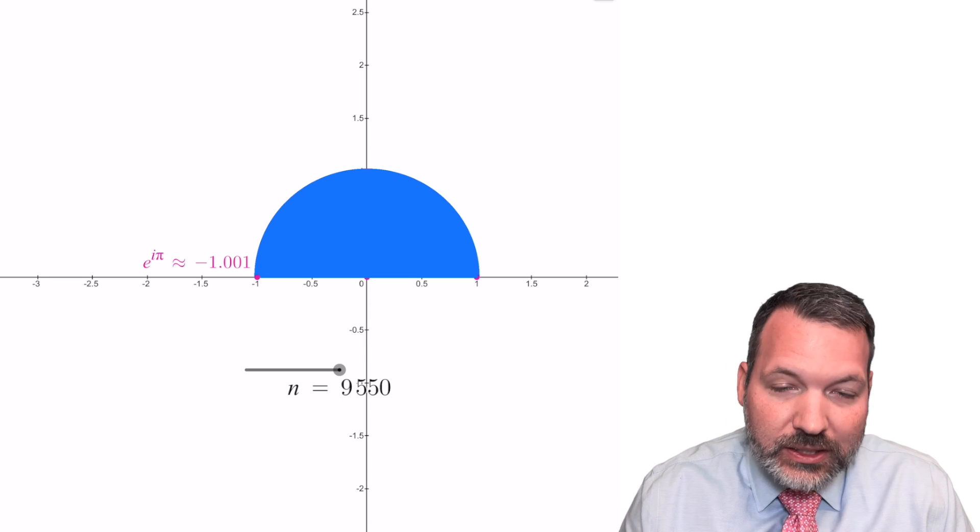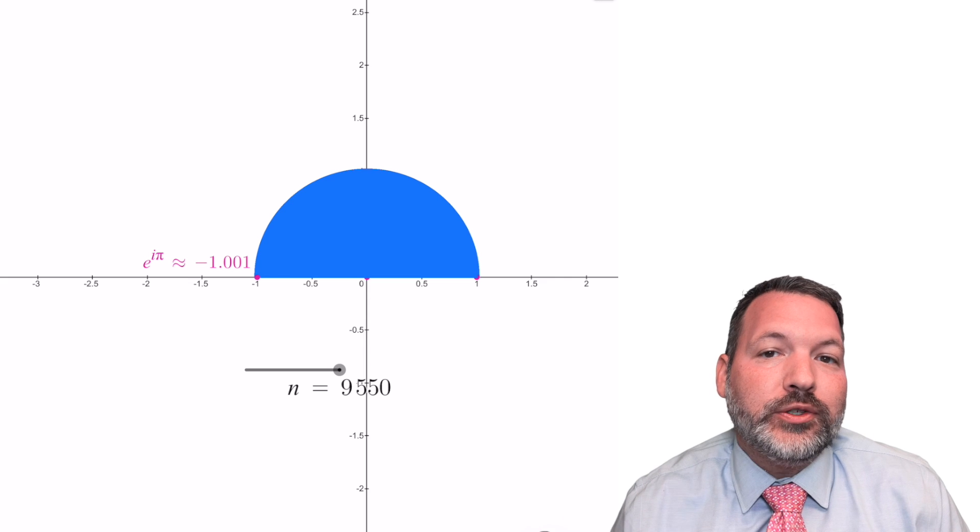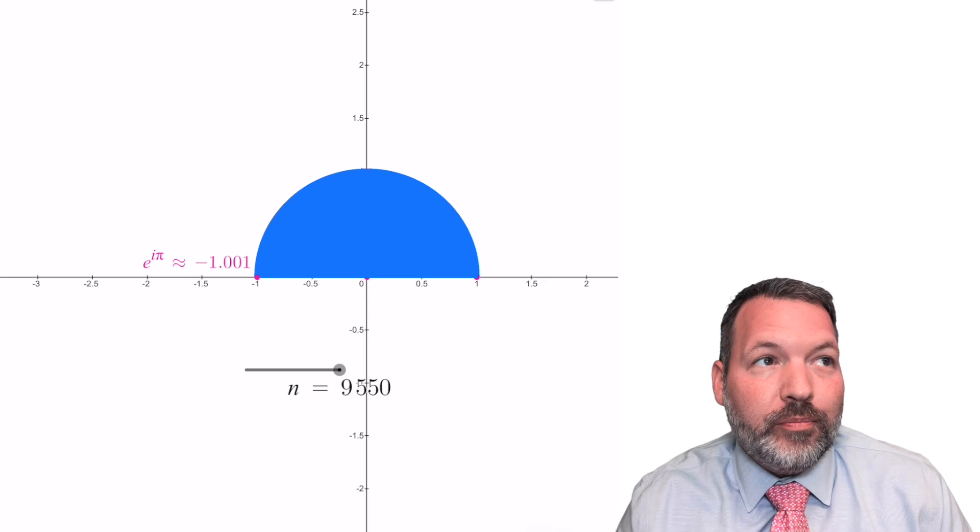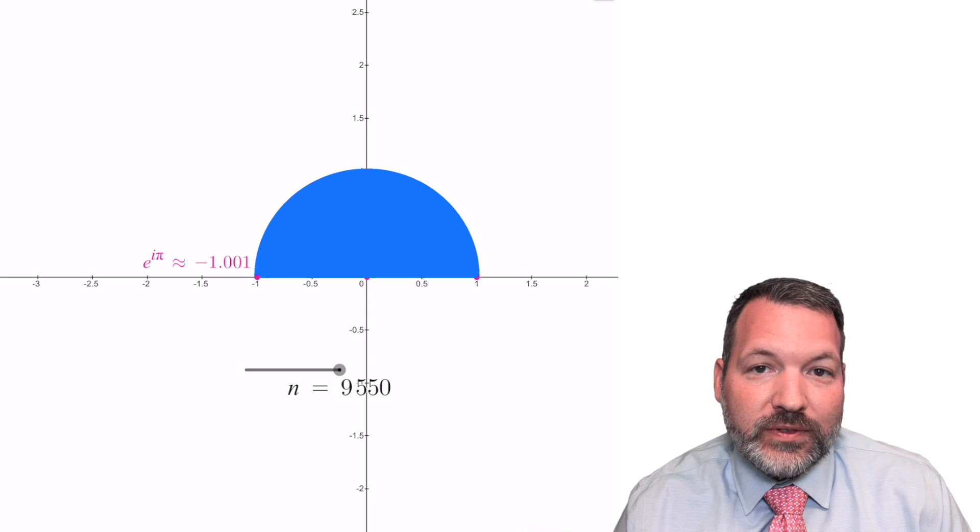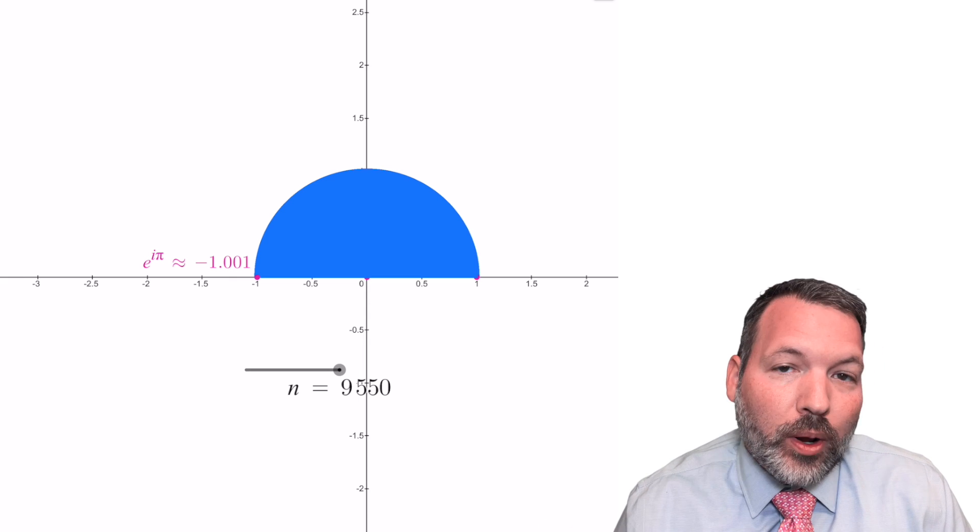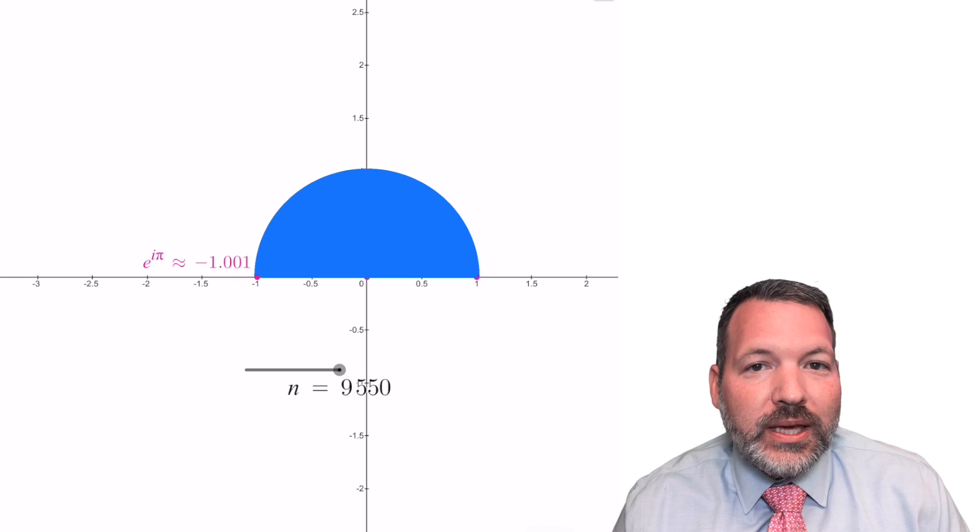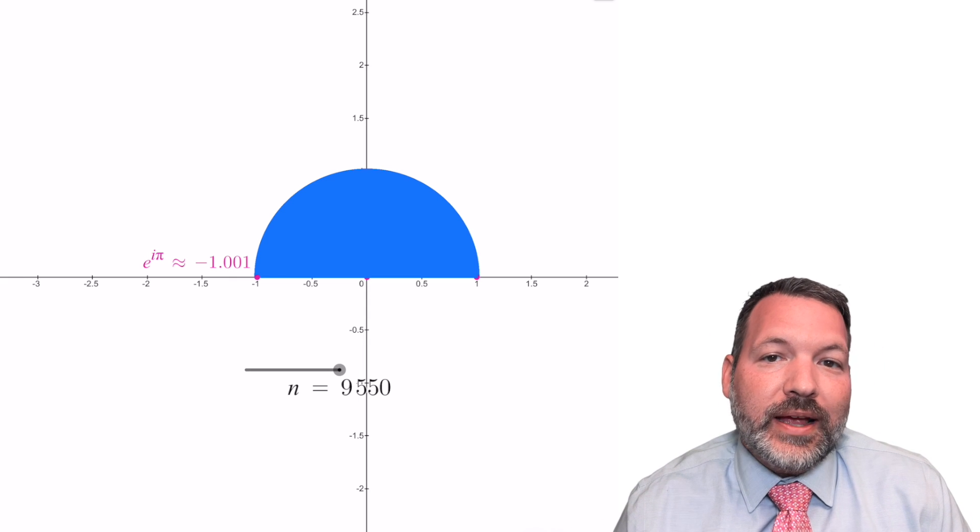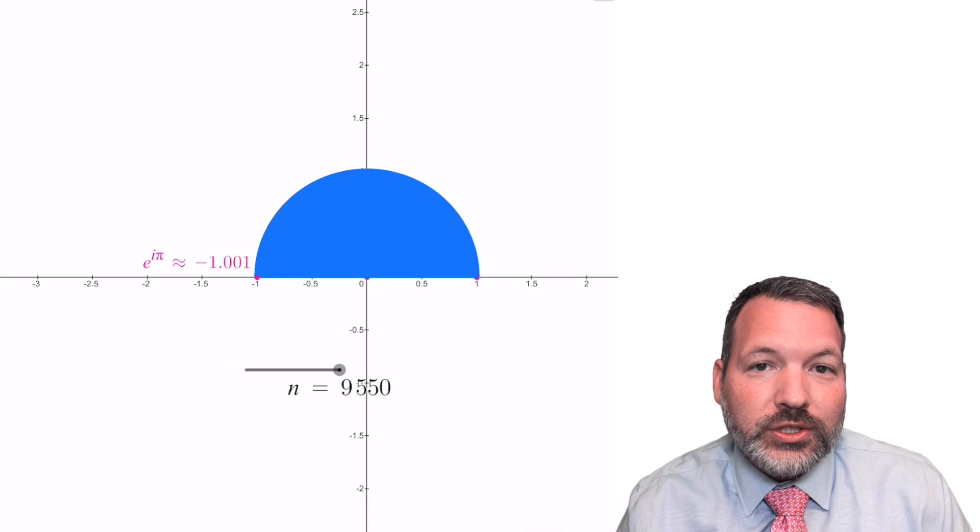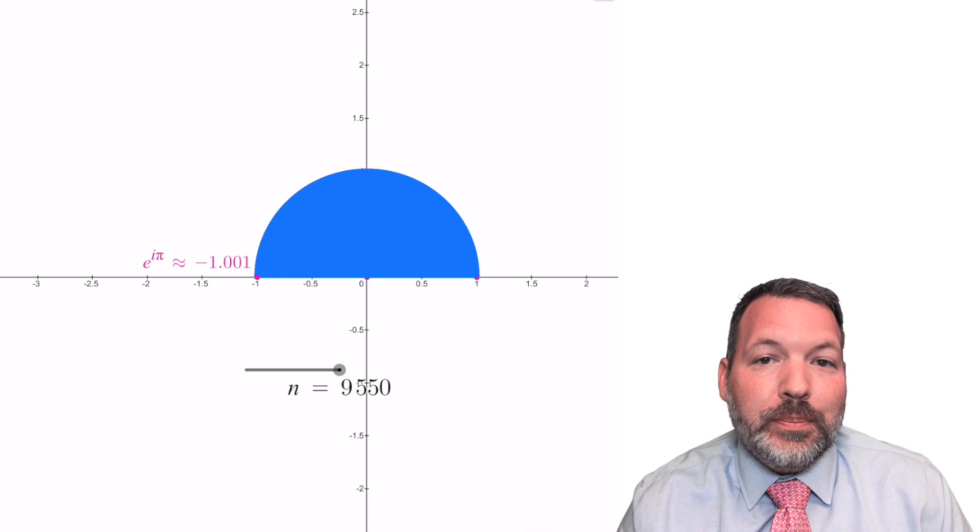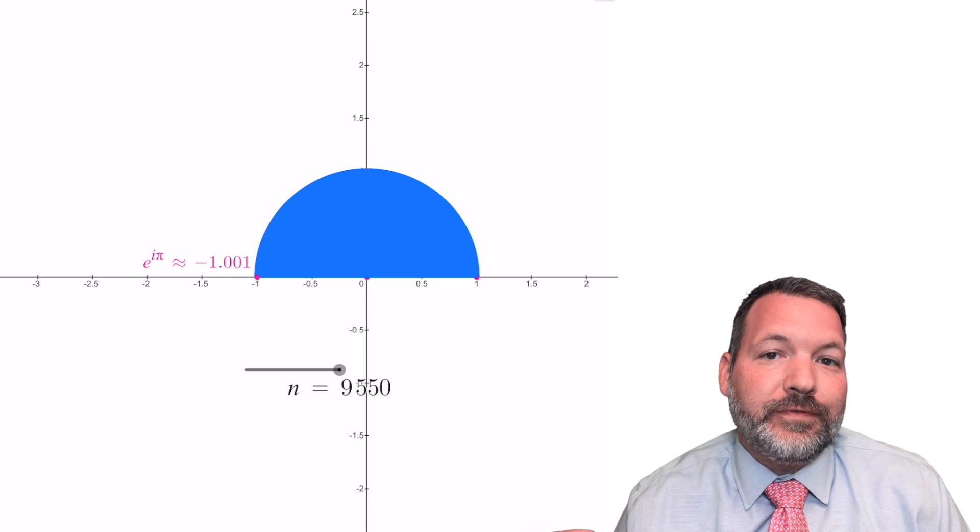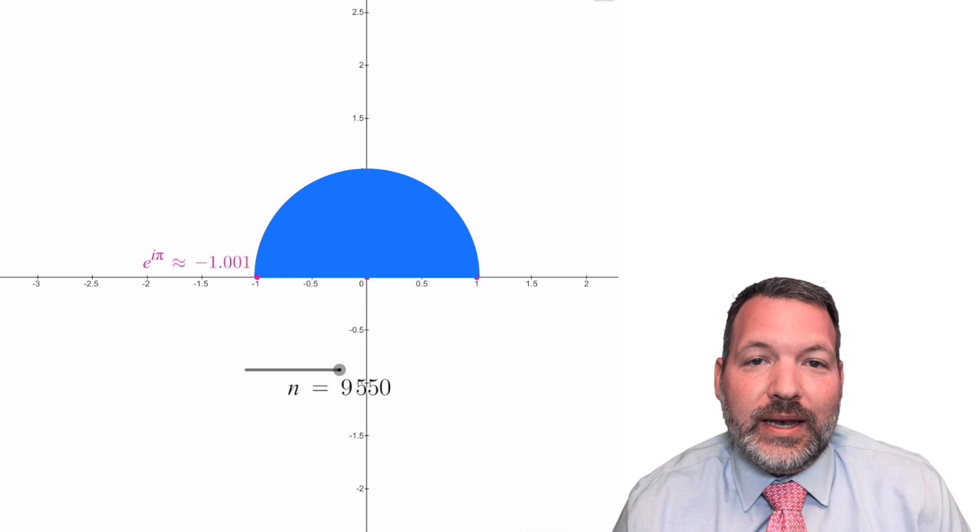It's the end result of, in this case, 9550 similar triangles, all with a height in the complex plane of pi i over 9550. And you can see in this particular case it gets us very, very close to negative 1, negative 1.001. But the key is we don't actually stop at n equals 9550. We imagine n going to literally infinity, getting as large as you want, and when that happens we're left with basically a perfect semicircle in complex space. And that semicircle has a final vertex on the left at negative 1.